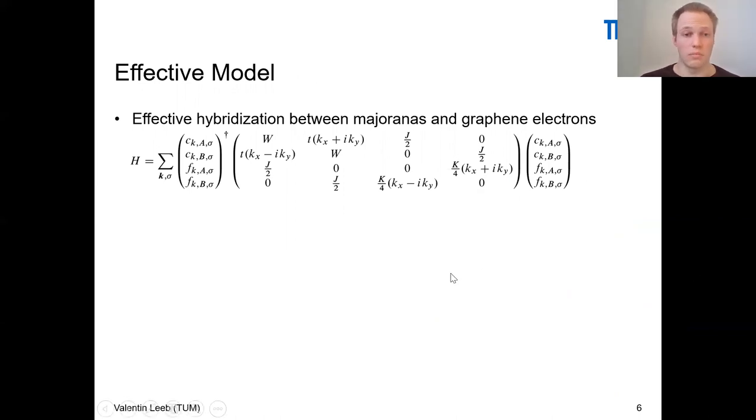On the top part here, what you can see is the low energy description of graphene. It's just a Dirac cone shifted by V from the Fermi energy. T is the bandwidth of graphene and is around 2.6 electron volts. Below, which looks very similar, is the description of the fractionalized excitations of the Kitaev layer. However, this value K here is much smaller than the value of T. K is around a few meV, so we can treat it as effectively flat.